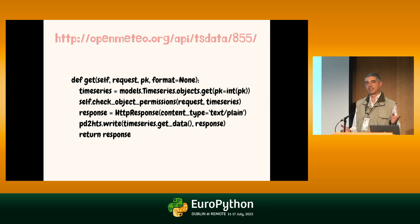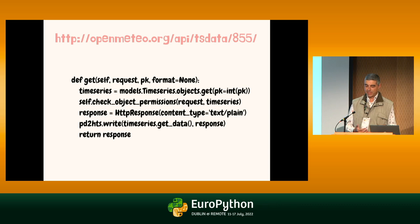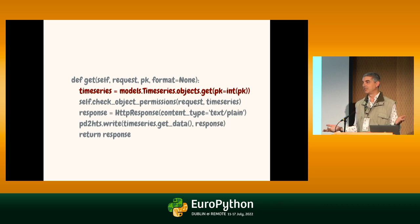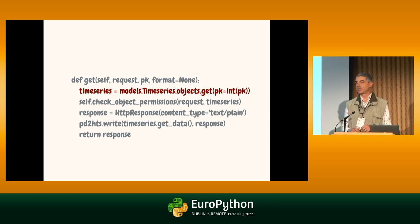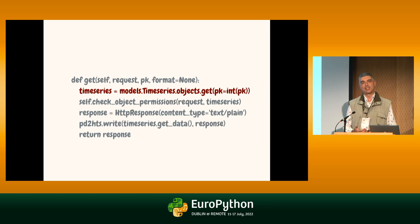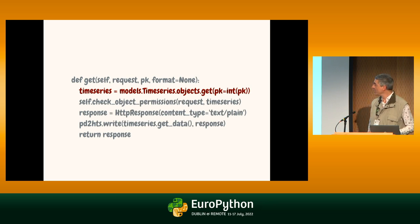...a user got an internal server error, and Django emailed me the traceback and the error message. It indicated that the problem was on this line — who can tell me what the problem was? The error message was 'time series does not exist.' So with all this, the diagnosis was trivial, and for people with some experience with Django, the fix is also trivial.